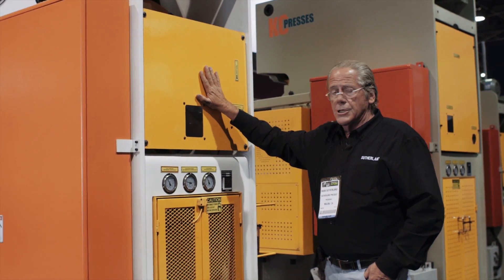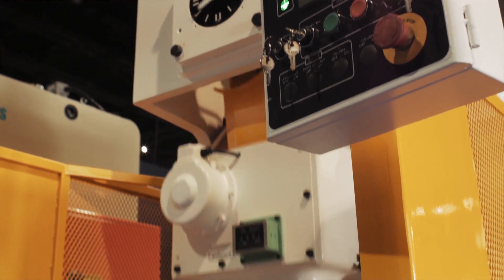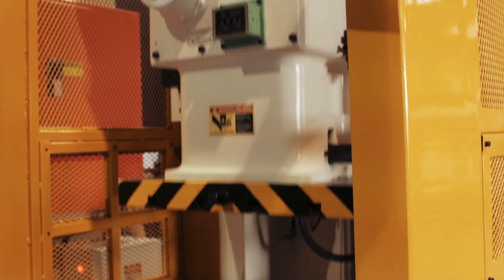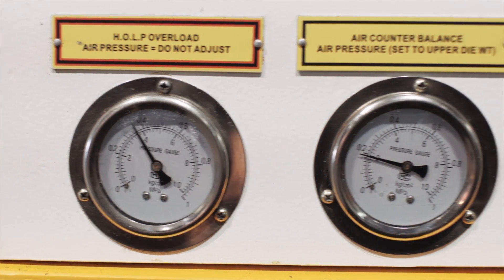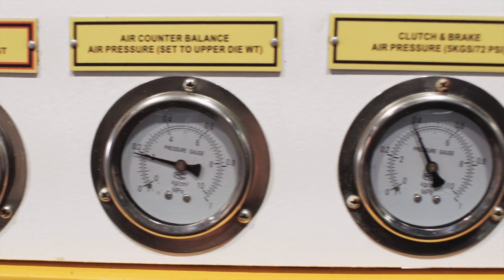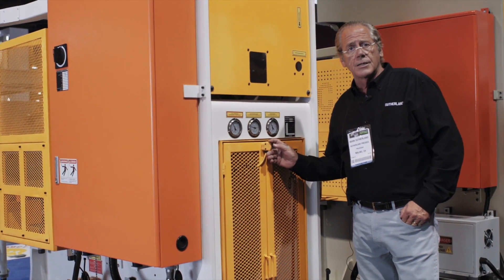We've got a clutch and brake and a flywheel brake, so we can stop the flywheel during die changes, so there's no possibility of the operator getting his hands pinched. Our air centers on the back of the press, the rear doors on the press, all have magnetic interlock switches.